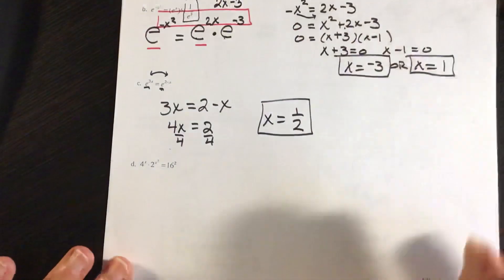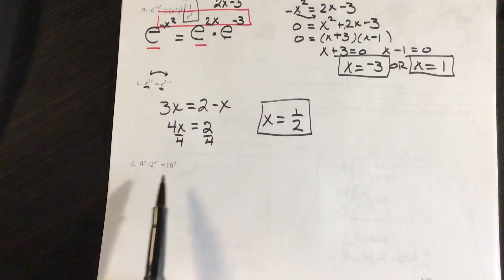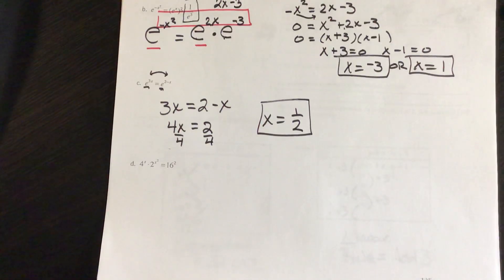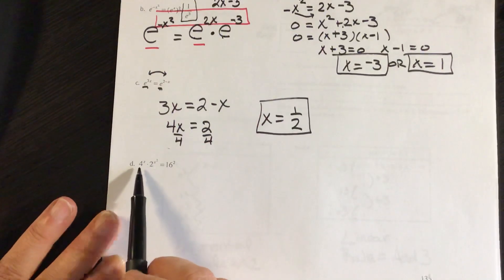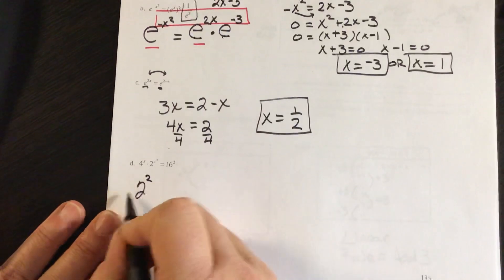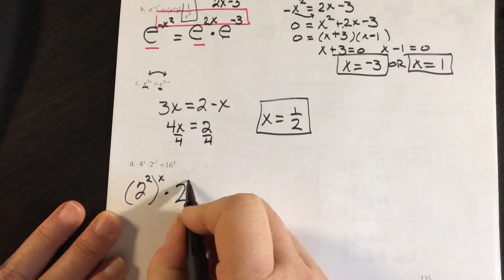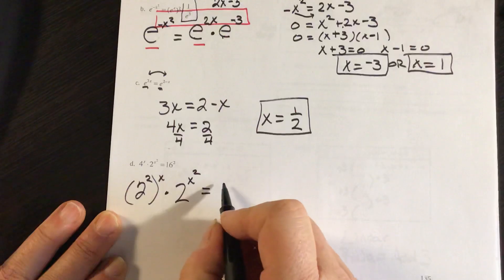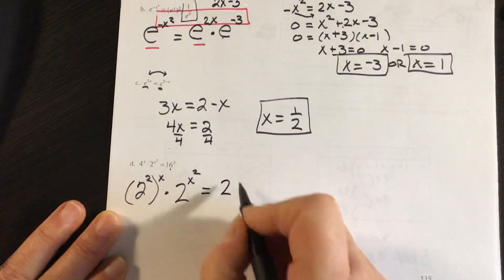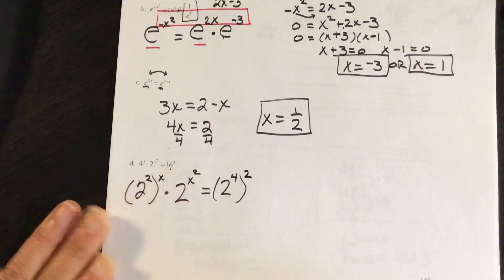And the last one for today. Here I've got three different bases, but 2 and 4 and 16 are all powers of 2. So I'm going to rewrite this sentence having 2 as my base. So I know that 4 is 2 squared, and that's to the x power. And then I have a 2 to the x squared power equals 16 squared. And 16 is 2 to the 4th power. And I have this exponent here, so that's squared.